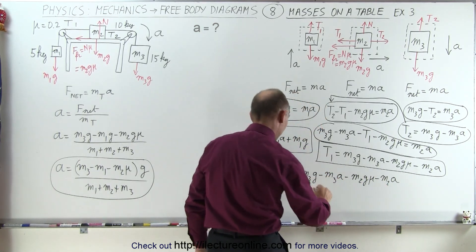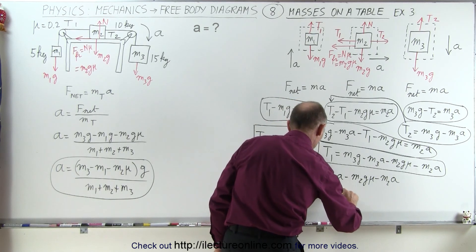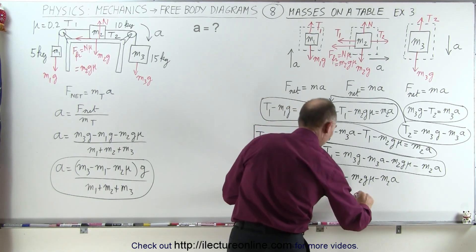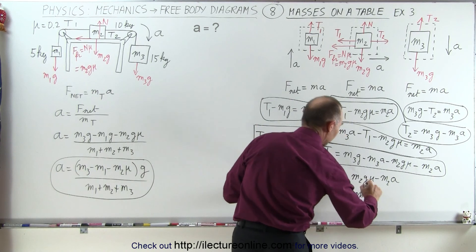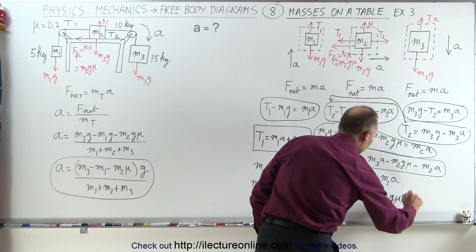On the right side, we have M3g minus M1g and minus M2g times mu.